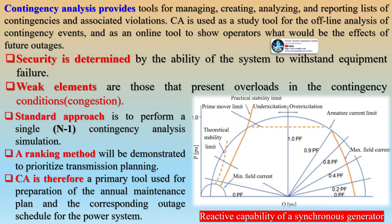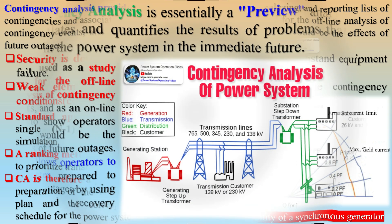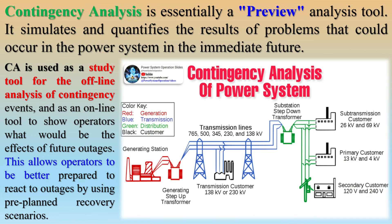The offline analysis to predict the effect of individual contingencies is a tedious task as a power system contains a large number of components. Practically, only selected contingencies will lead to severe conditions in the power system. The process of identifying these severe contingencies is referred to as contingency selection, and this can be done by calculating performance indices for each contingency. It is well known that a power system is a complex network consisting of numerous equipment like generators, transformers, transmission lines, and circuit breakers. Failure of any of these during operation harms system reliability and leads to outages.